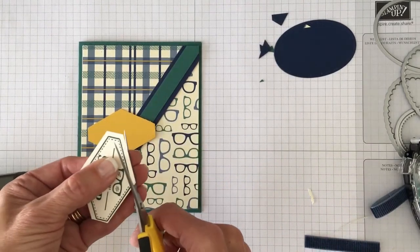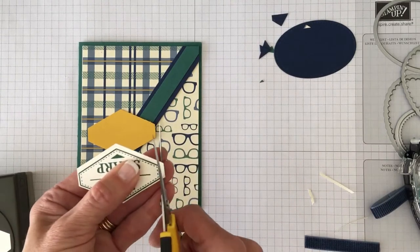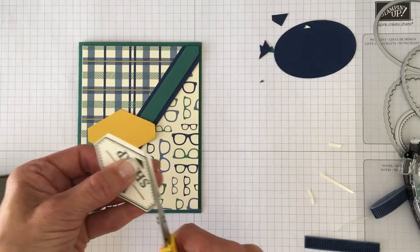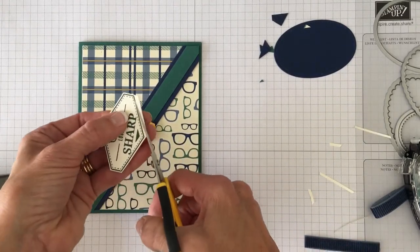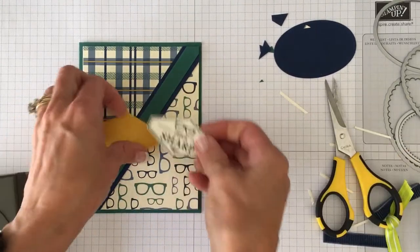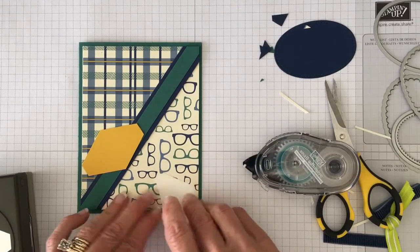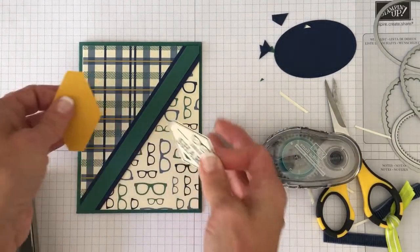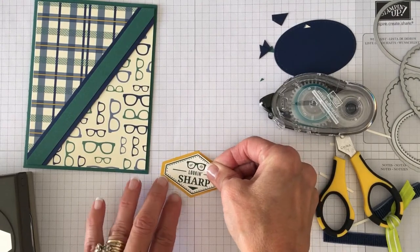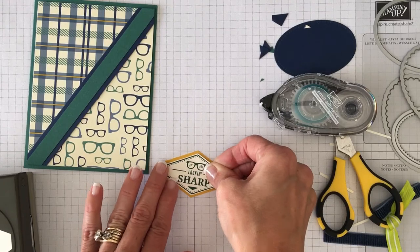So I just trimmed right along the border trying to get just the same amount of Very Vanilla showing along the line. And then I put some adhesive on there and then I mounted it to my crushed curry. So we just get a nice crushed curry border around our whole image.